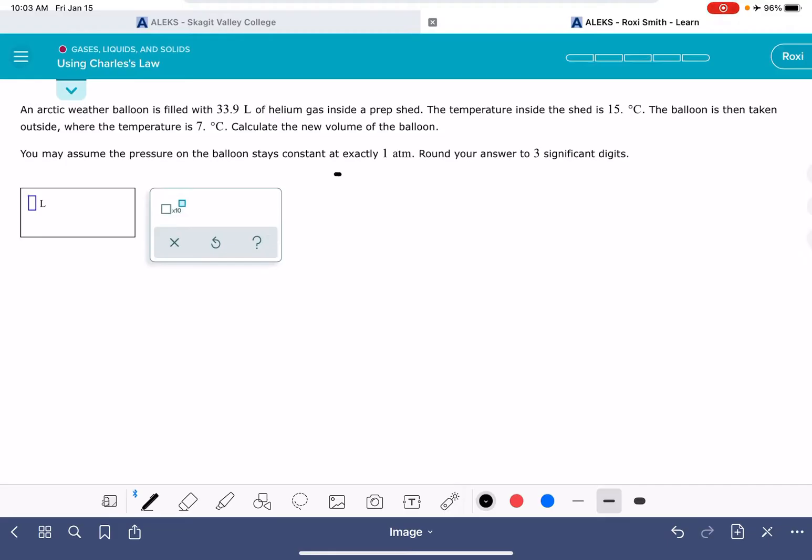And mathematically, Charles' Law is T1 over V1 equals T2 over V2. In this equation,